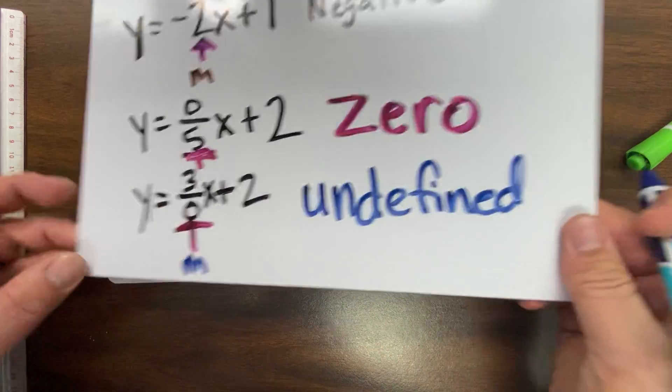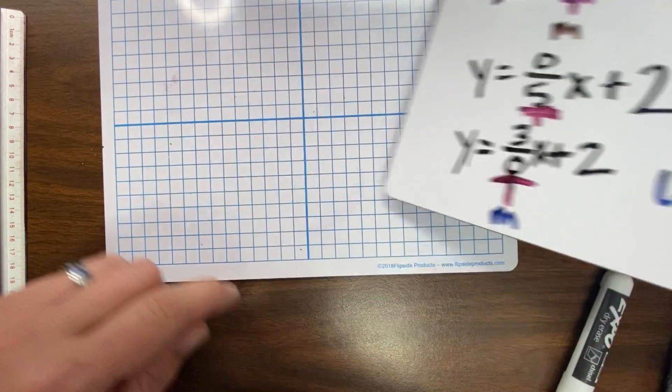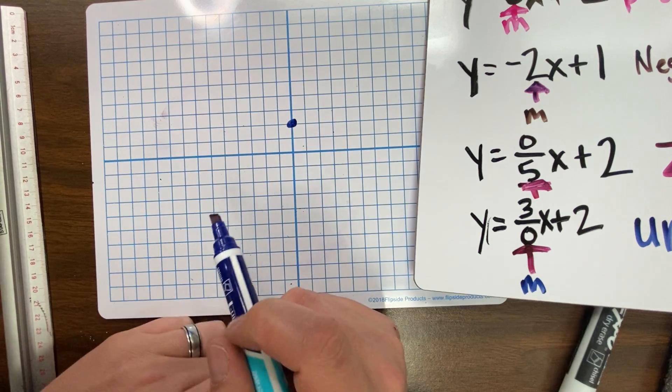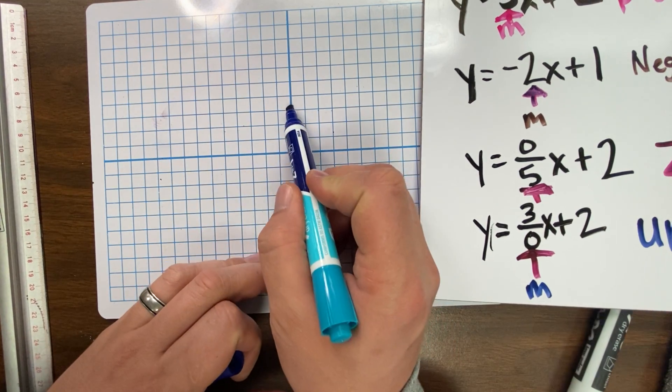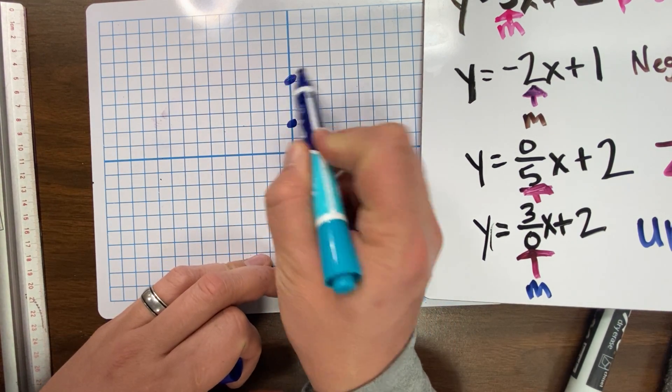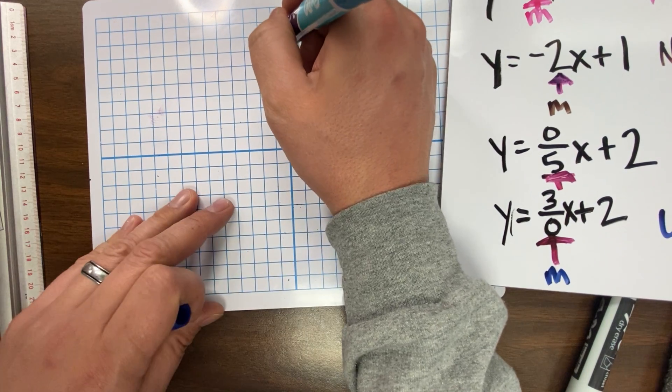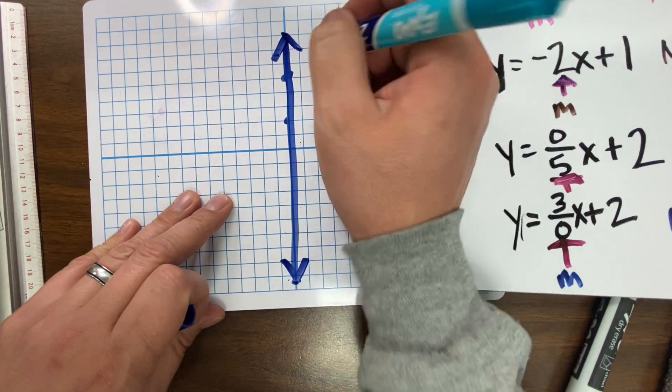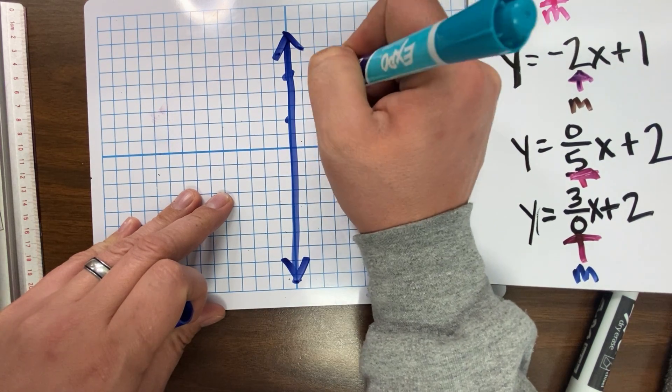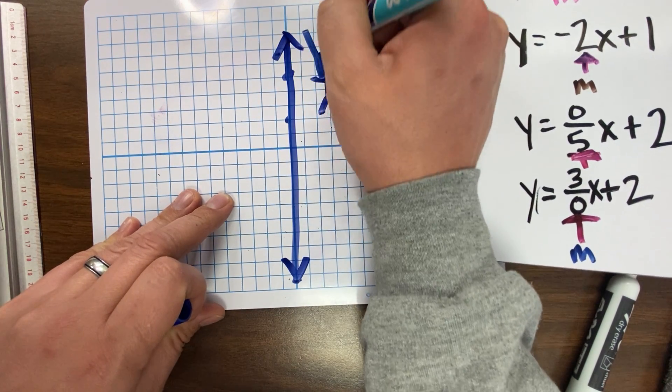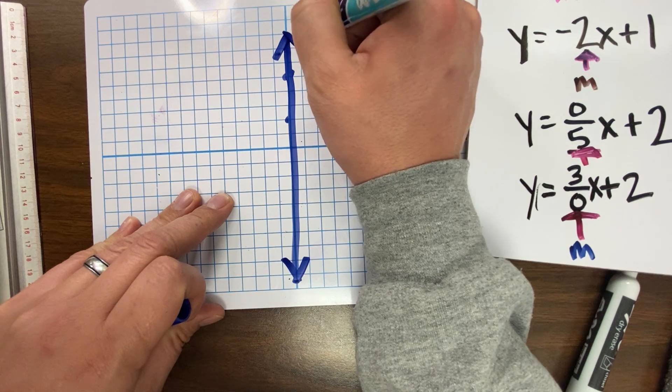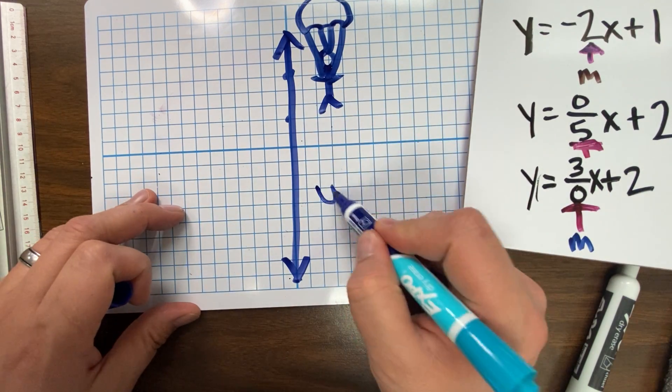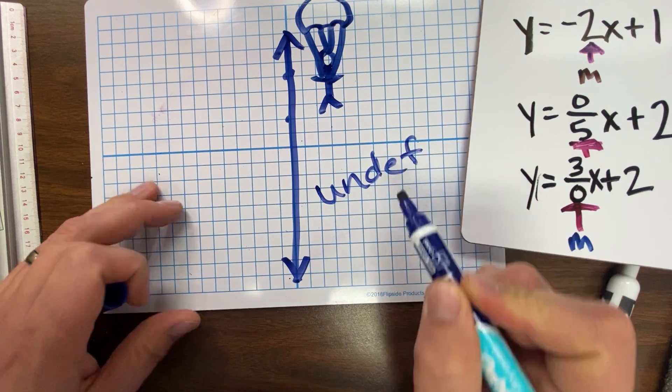And the reason why is we'll put our first dot at 2 right there. And then 3 divided by 0 means I would go up 3, 1, 2, 3, and over 0. And so it would be, in theory, a straight up and down. The picture I usually see about the stick man shows him with a parachute falling down. Undefined. Sometimes abbreviated undefined.